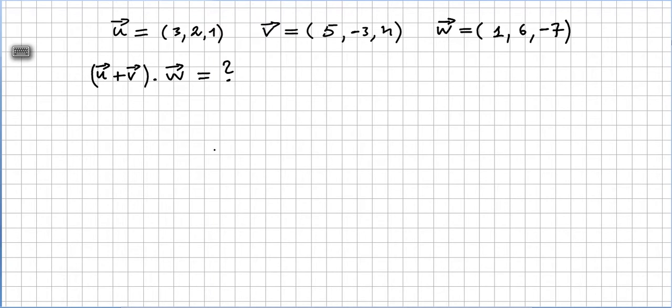So we have vector u equals (3, 2, 1), vector v equals (5, -3, 4), and vector w equals (1, 6, -7). We are asked to add u plus v and do the inner or the dot product with w.